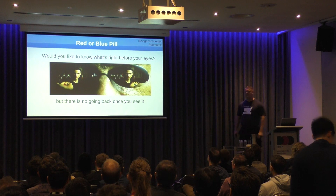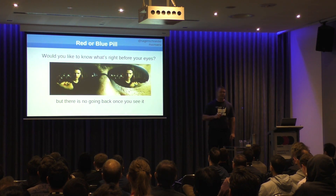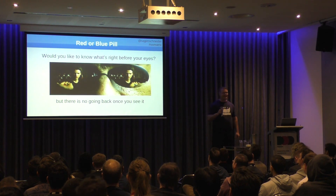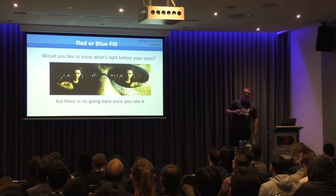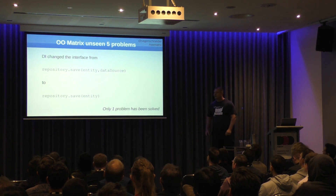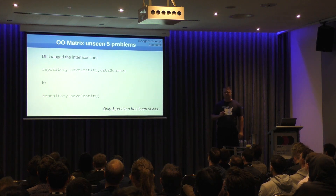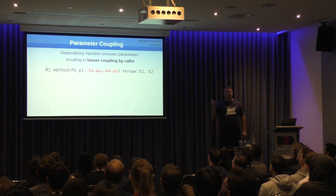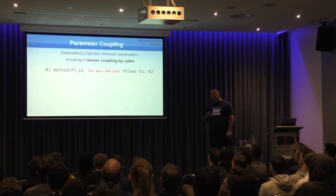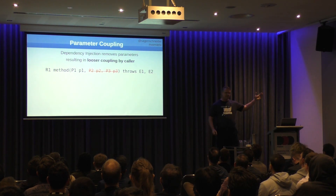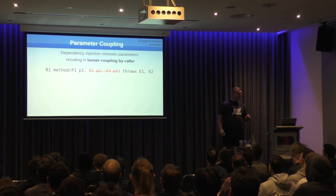There's something that was before your eyes, and I've already shown you the OO Matrix. This is the last chance — I'm going to give you the red pill, last chance to walk out. You're not going to be able to unsee this. What dependency injection actually solved is it removed the parameters for the caller. These no longer need to be provided by the caller — they're injected in. It's much looser coupling; that coupling is actually gone.